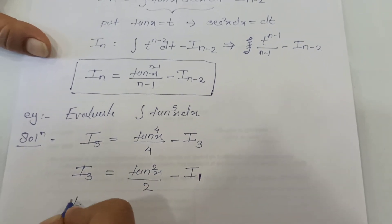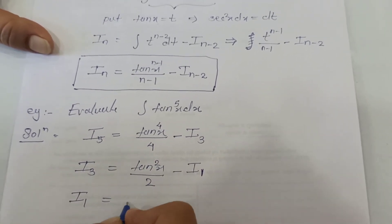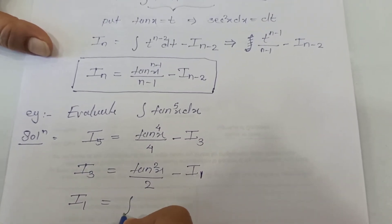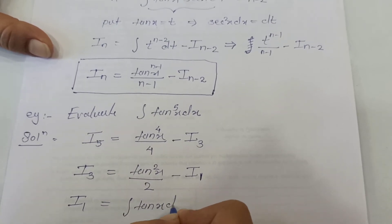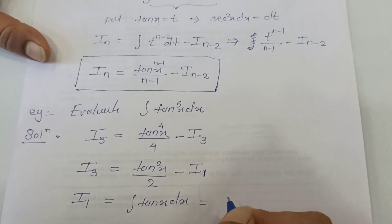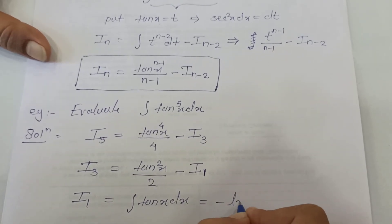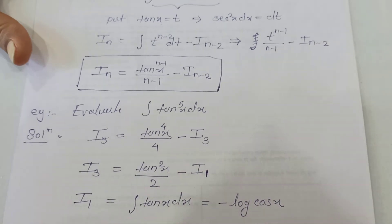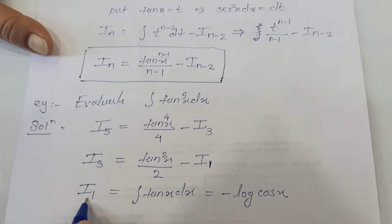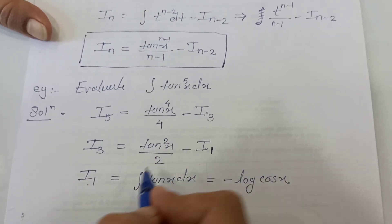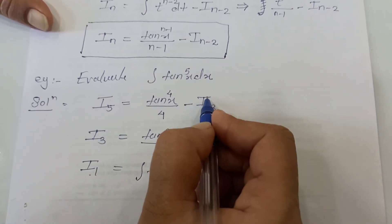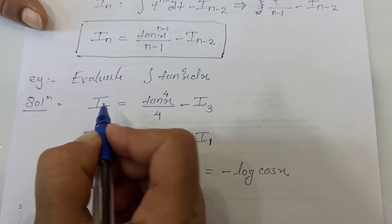Now let's evaluate I_1. In terms of integration, I_1 is the integration of tan raised to 1 times x dx, which is the integration of tan x dx. We know that the integration of tan x is minus log of cos x. We have the value of I_1; now put it into I_3, and then use back substitution to find I_5.